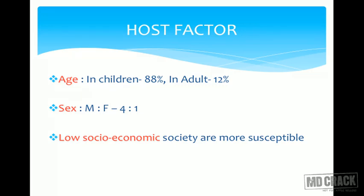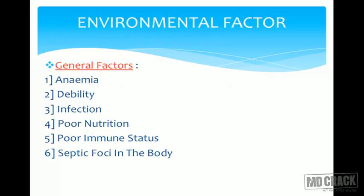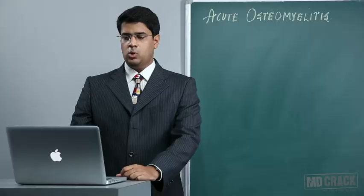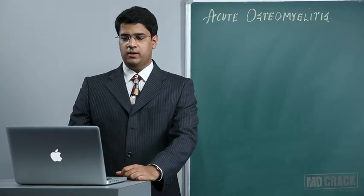Regarding host factors — age: in children it is almost 88% while in adults it is 12%, so the majority of patients are children. The male to female ratio is 4:1. It is usually seen in low socioeconomic status due to environmental conditions. General environmental factors include anemia, debility, infection, poor nutrition, poor immune status, and septic foci in the body — all of which increase susceptibility to osteomyelitis.